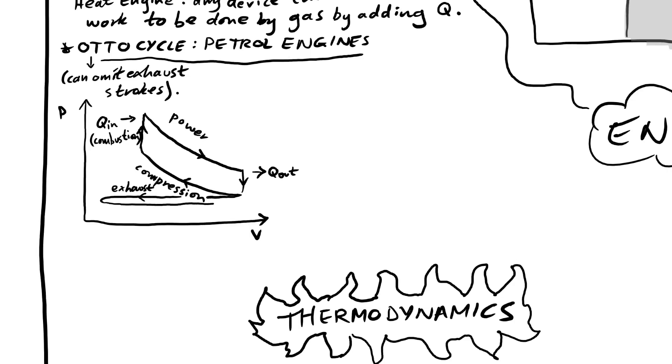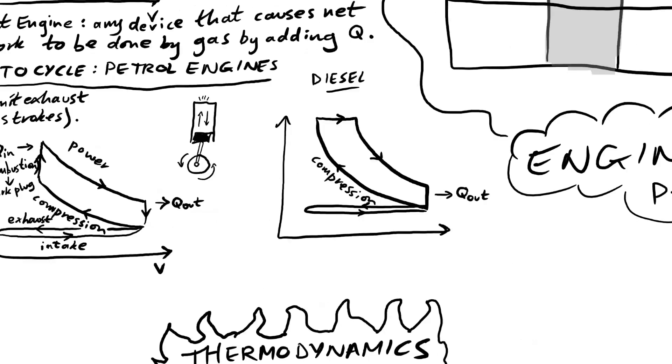Now for an Otto cycle, you don't need to add in the extra exhaust and intake strokes. Diesel engine, slightly different. Yes, we compress it, but then we don't have a spark plug. The air is heated and that just ignites the fuel as it's injected into the cylinder. And so the top part and the curvy part going down, they're both parts of the power stroke. And so because we have this bigger area in a diesel PV loop, that means we have more work done by the gas per cycle. That's why diesel is slightly more expensive because you do get more miles out of diesel than you do out of petrol, pound for pound.